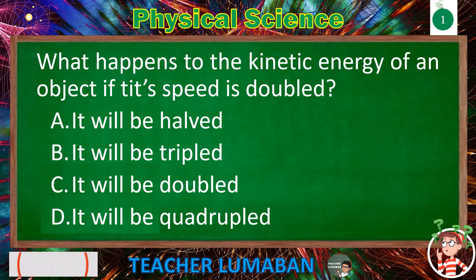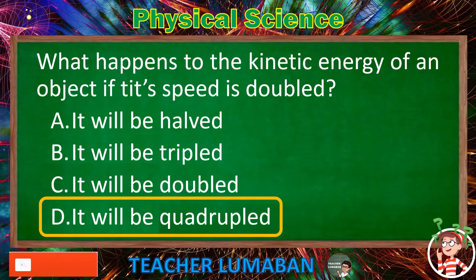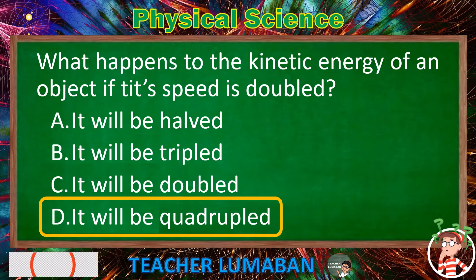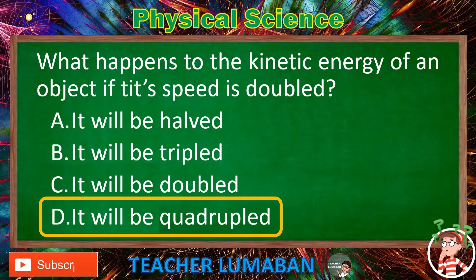The correct answer is letter D — It will be quadrupled. The kinetic energy of an object whose speed is doubled will be quadrupled.